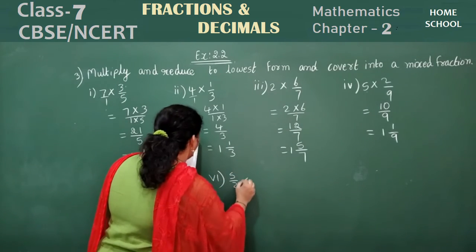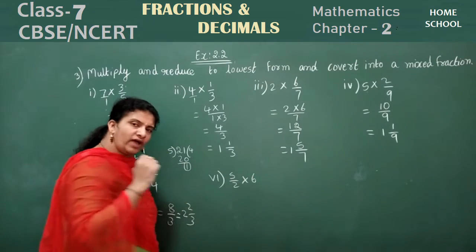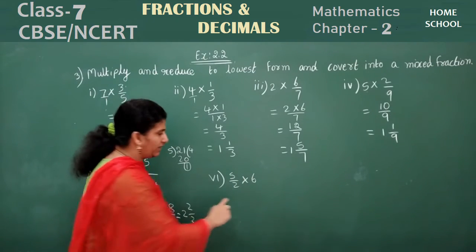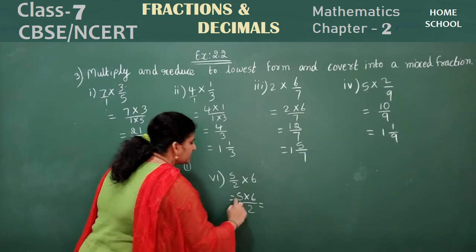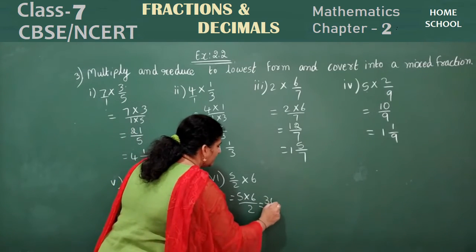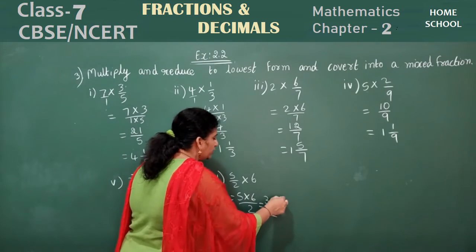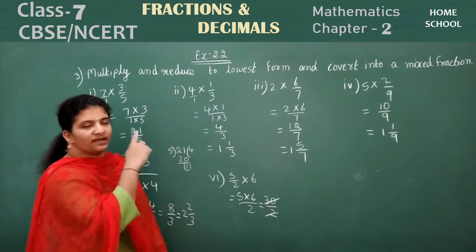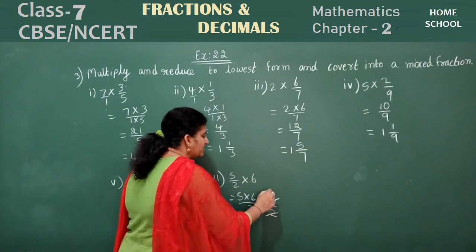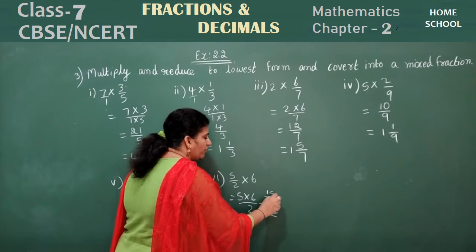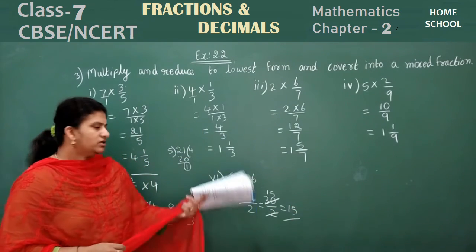Sixth problem: 5 by 2 into 6. Multiply numerator by numerator: 5 into 6 is 30, over 2. So 30 by 2. They said reduce to lowest form, so simplify: 30 divided by 2 is 15. Answer: 15.